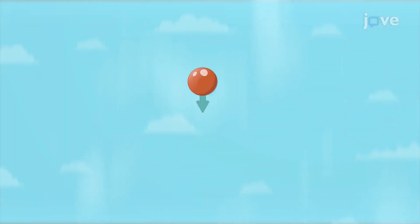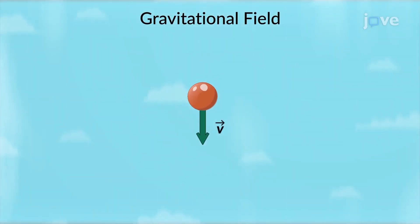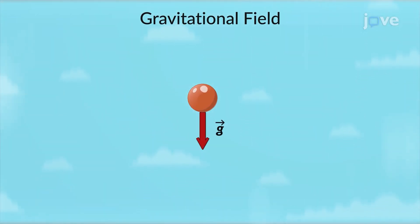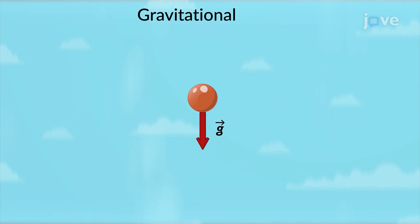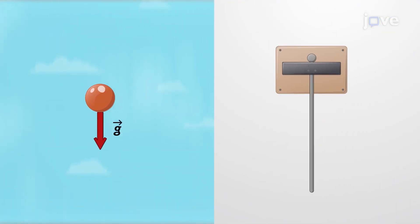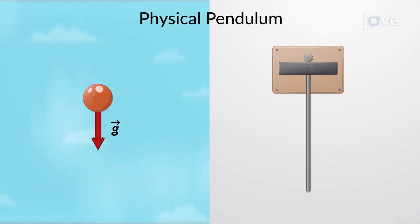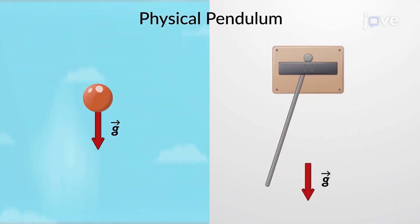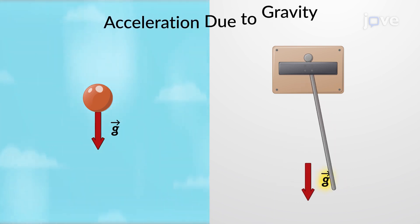An object in a gravitational field experiences acceleration due to the gravitational force. Using a physical pendulum, the value of acceleration due to gravity can be measured.